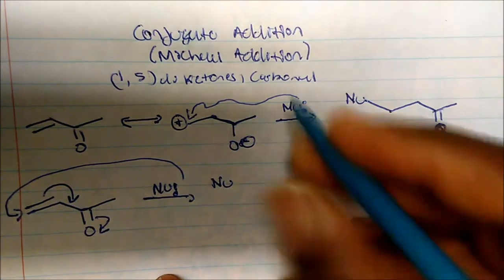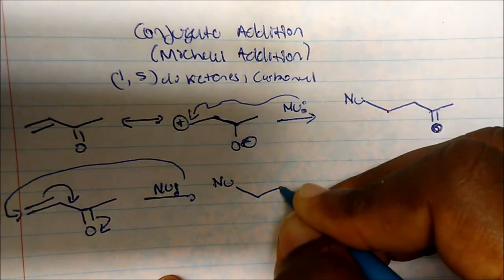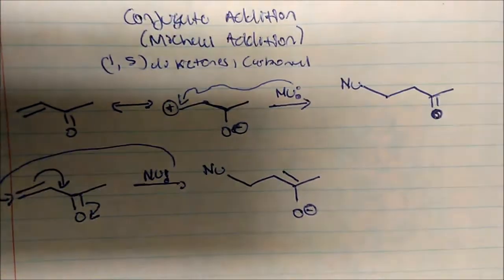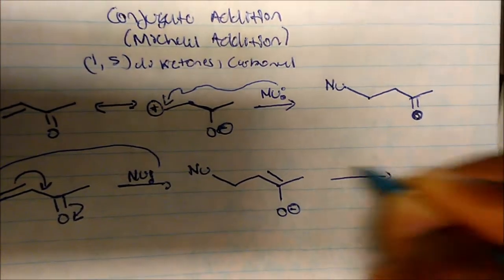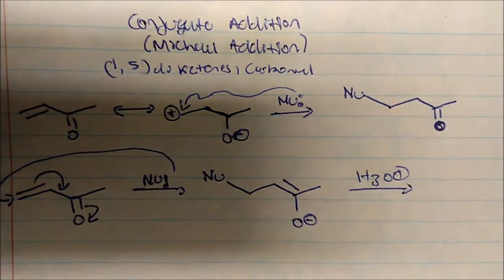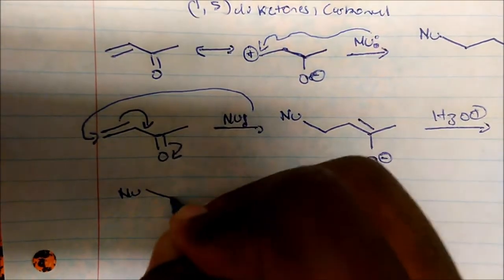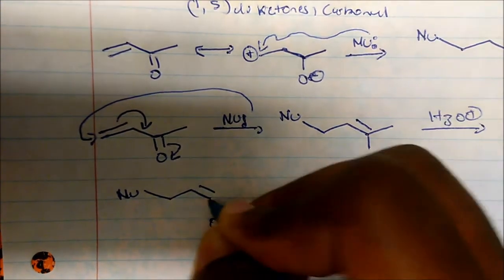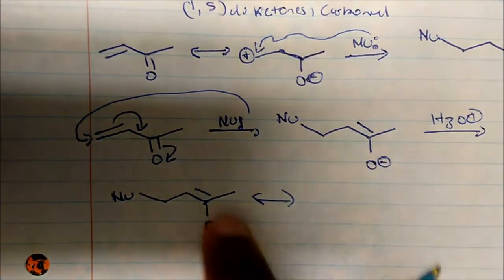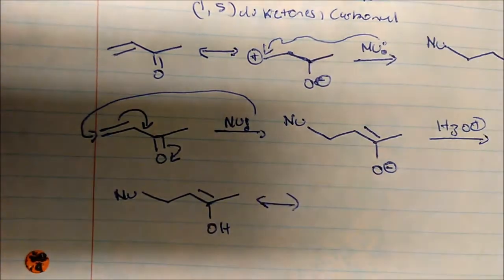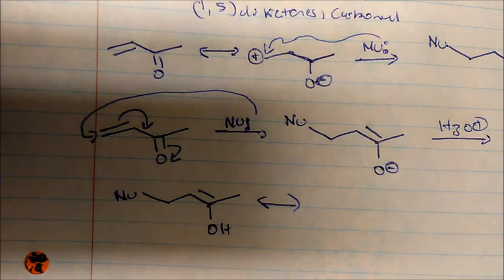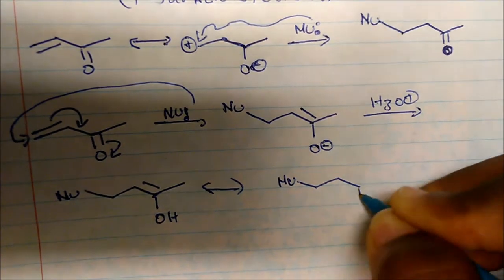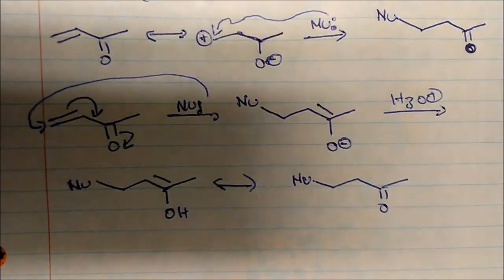Now we have our nucleophile bonded, along with the double bond, the oxygen with the negative charge, and the CH3 group. Typically we work this up in acid, giving us the nucleophile, the alkene, the alcohol, and the CH3. Remember, these are tautomers — when we have an alkene beside an alcohol, we get the ketone. So the new product looks like the ketone form, and this is 1,5-addition.